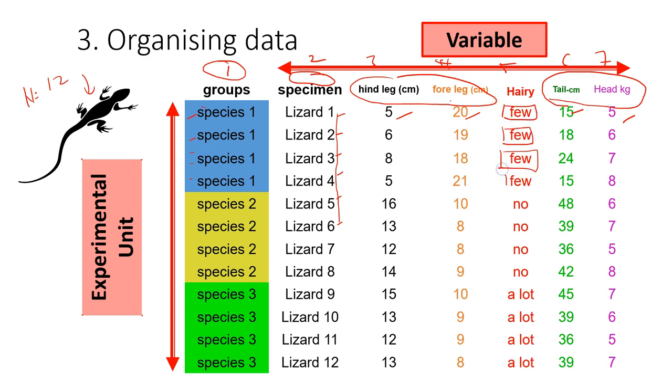At the same time, you also have ordinal data to show the different categories of the lizard in terms of the number of hairs on the skin. It's divided into three categories, and each of these categories can be ranked - for example, from no hair to a few hairs to a lot of hairs.